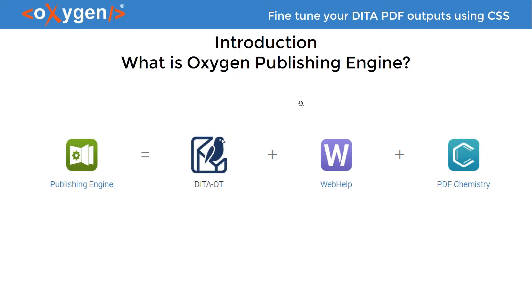The Oxygen Publishing Engine is the DITA Open Toolkit engine, which we extend using two additional plugins: the Web Help Responsive plugin and the PDF Chemistry plugin, which provides CSS and PDF support. We can use it in Oxygen — in our case Oxygen 22.1 — or as a standalone product for continuous integration scenarios.